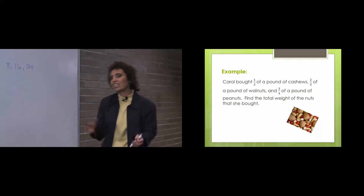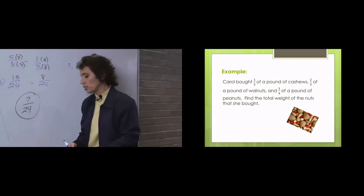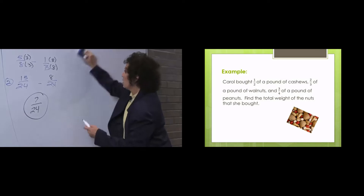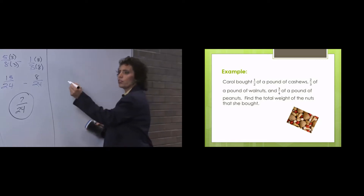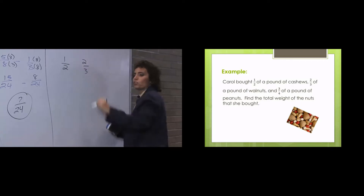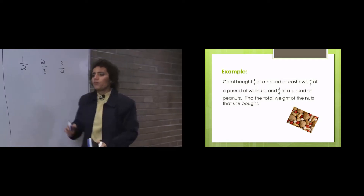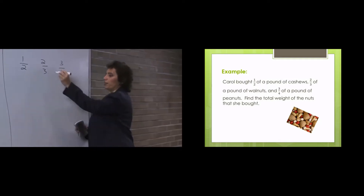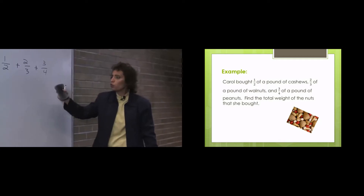Let's take a look at this next problem — I think it's easier. Carol bought 1 half of a pound of cashews, 2 thirds of a pound of walnuts, 3 fourths of a pound of peanuts. Find the total weight of the nuts that she bought. So she wants the total — that means we're going to add these. We're going to add 1 half plus 2 thirds plus 3 fourths.